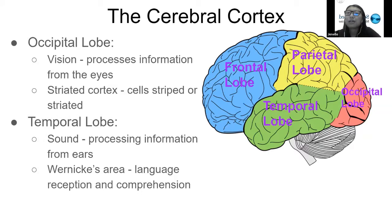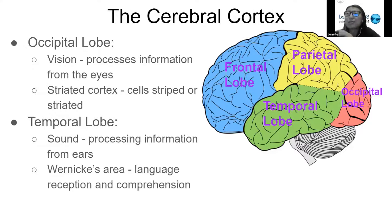The temporal lobe is responsible for sound — processing information from your ears. It's also associated with Wernicke's area, which is located in that lobe and is responsible for language reception and comprehension.